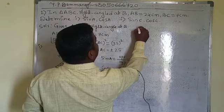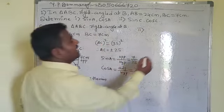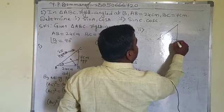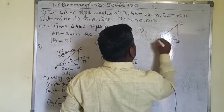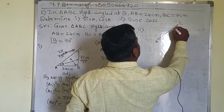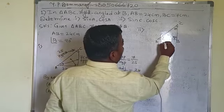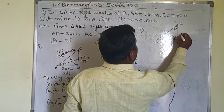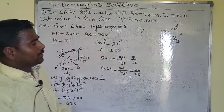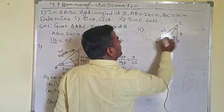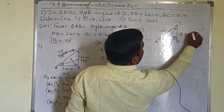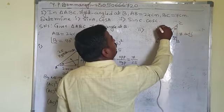Now for the second case, angle C. Let me redraw the triangle: B is here, C is here, A is here, with the right angle at B being 90 degrees. Taking theta at angle C — AB = 24 is the opposite side, BC = 7 is the adjacent side, and AC = 25 is the hypotenuse.